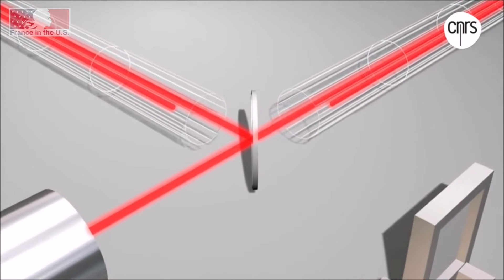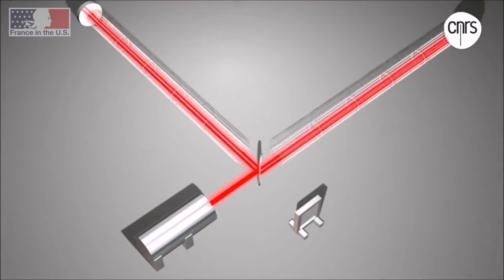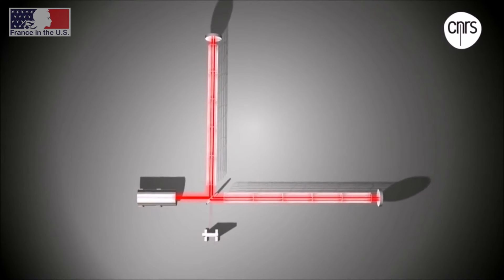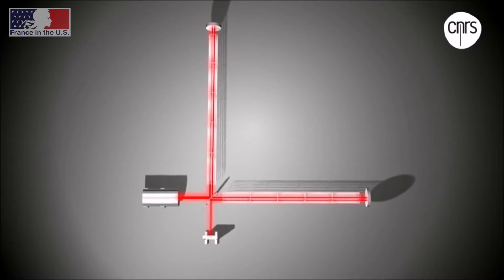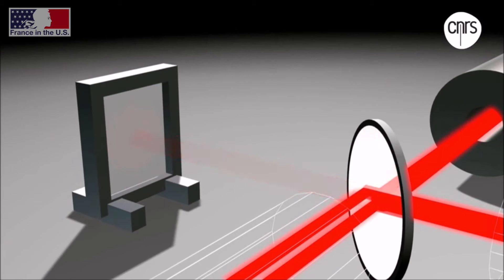We let the two beams travel in two orthogonal directions. Then the beams are sent back and they recombine. And what we do, we measure the delay between the two beams. Since the space-time is stretched in an asymmetric way, the two beams have a delay.